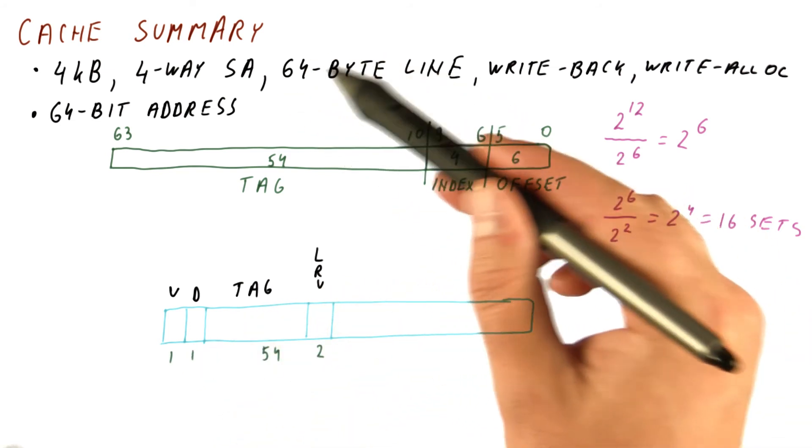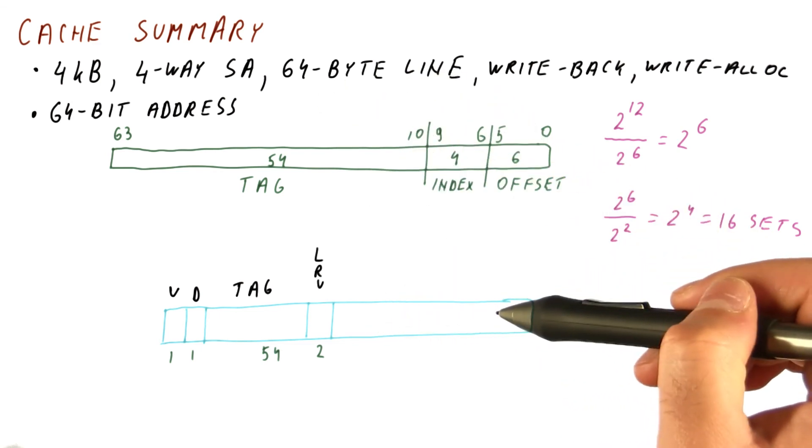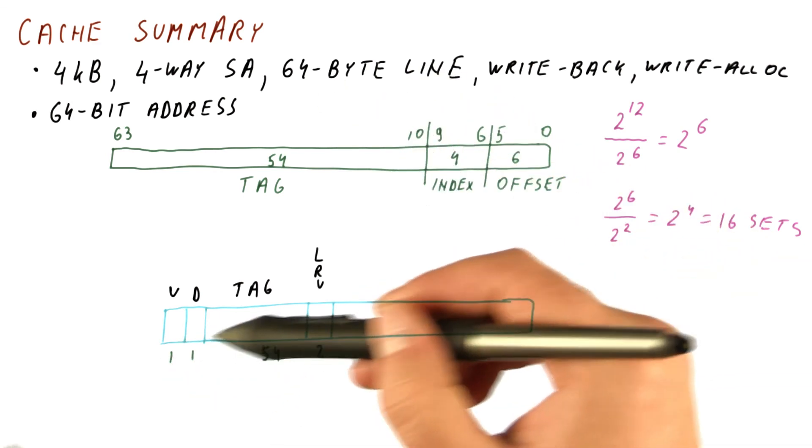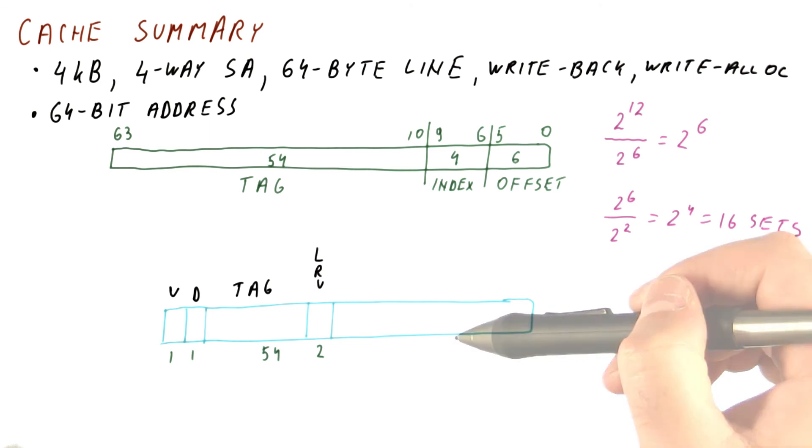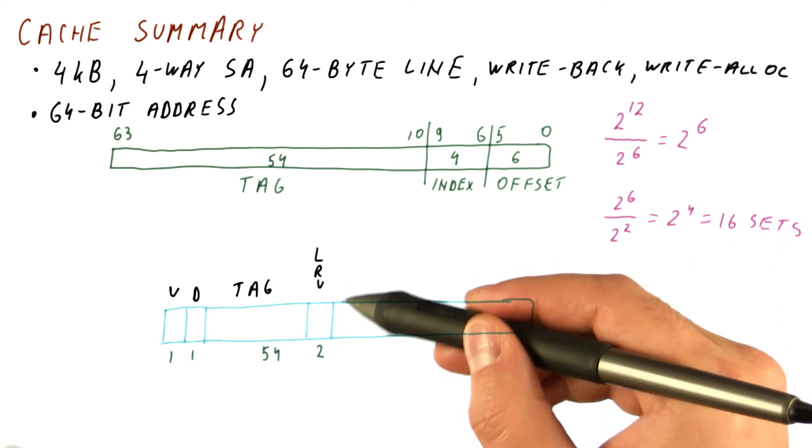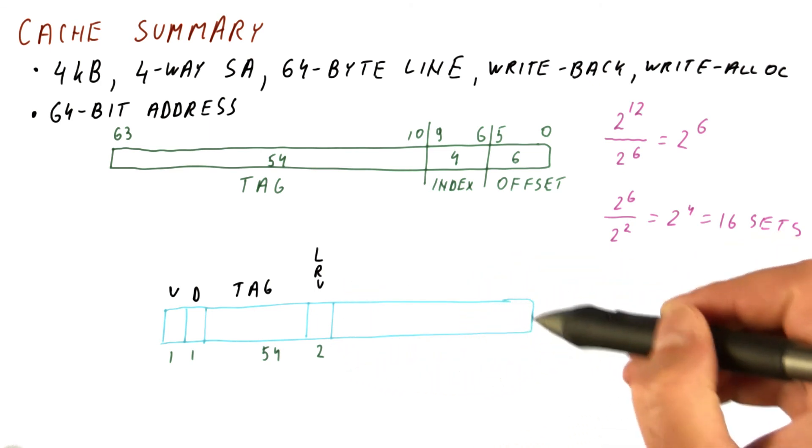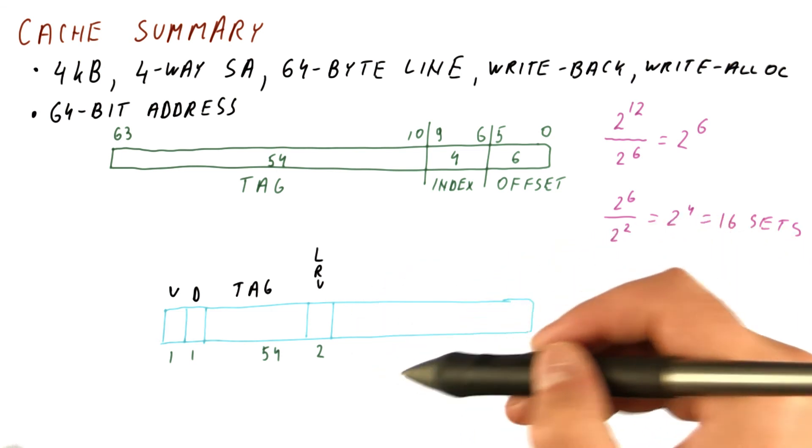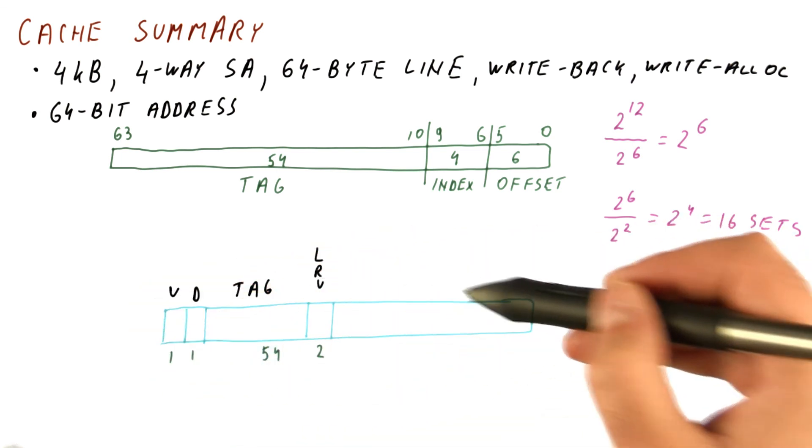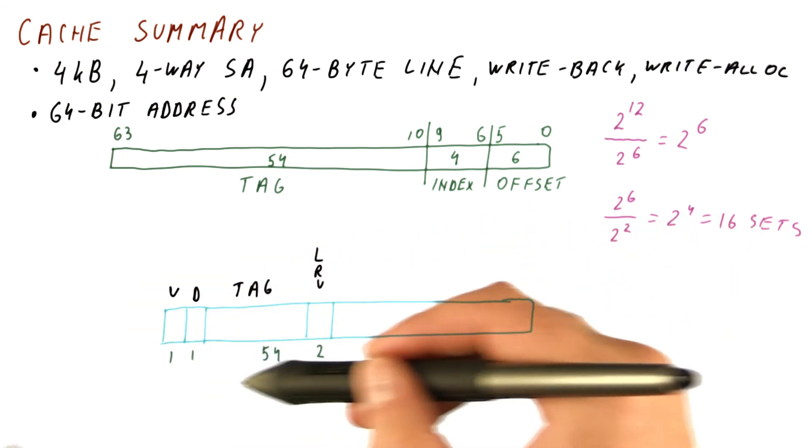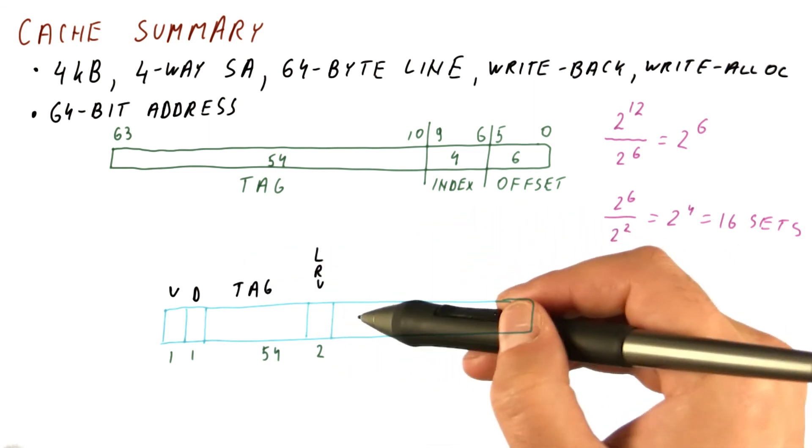And then we have 64 bytes worth of actual data. As you can see, we have 58 bytes in addition to the data, so there is some overhead. The cache size is usually expressed in terms of how much data it contains, but the actual size of the cache array is larger because it needs to contain all of these extra bits for each line of data.